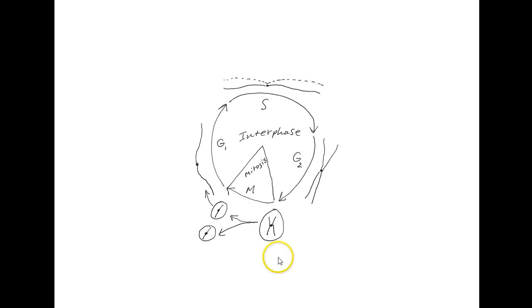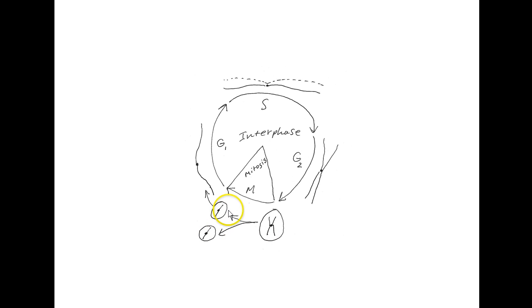If we start at the beginning of mitosis, we have a cell with double-stranded chromosomes. In a human, instead of one, we would have 46 of these double-stranded chromosomes. During mitosis, the two sister chromatids are separated from each other and go into different daughter cells. In a human, we would then have 46 single-stranded chromosomes in each resulting cell.